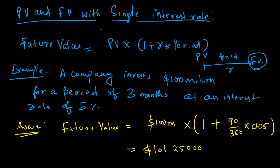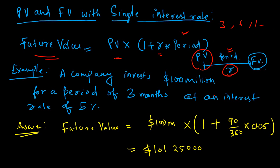Let's learn how to compute future value using a formula. The future value of an asset whose present value is known can be calculated as: Future Value = Present Value × (1 + risk-free rate × period). The period could be 3 months, 6 months, 1 year, and so on.